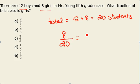Therefore, this simplifies down to 2 fifths. 2 fifths of Mr. Zhang's class represents girls.